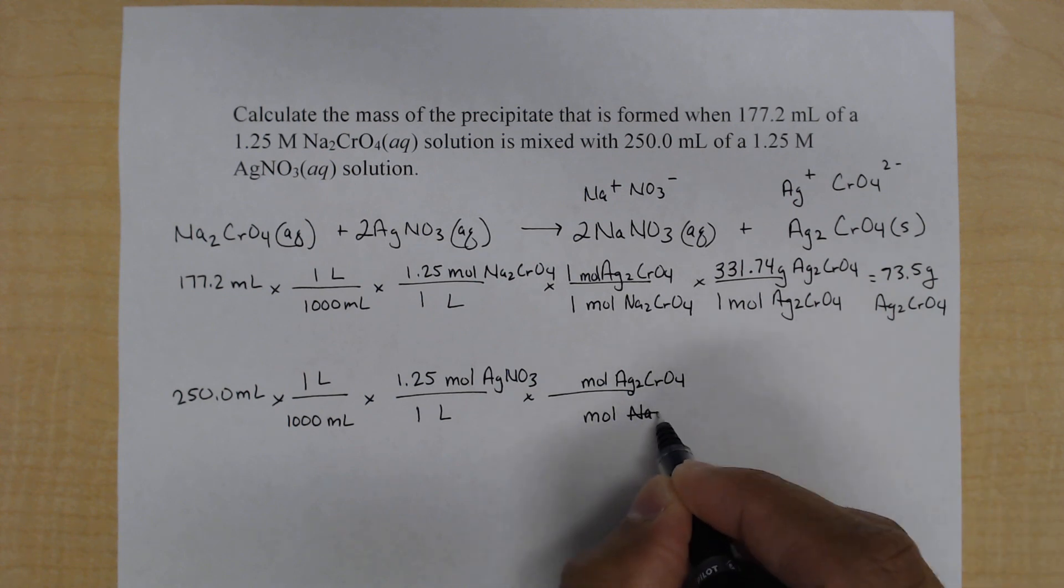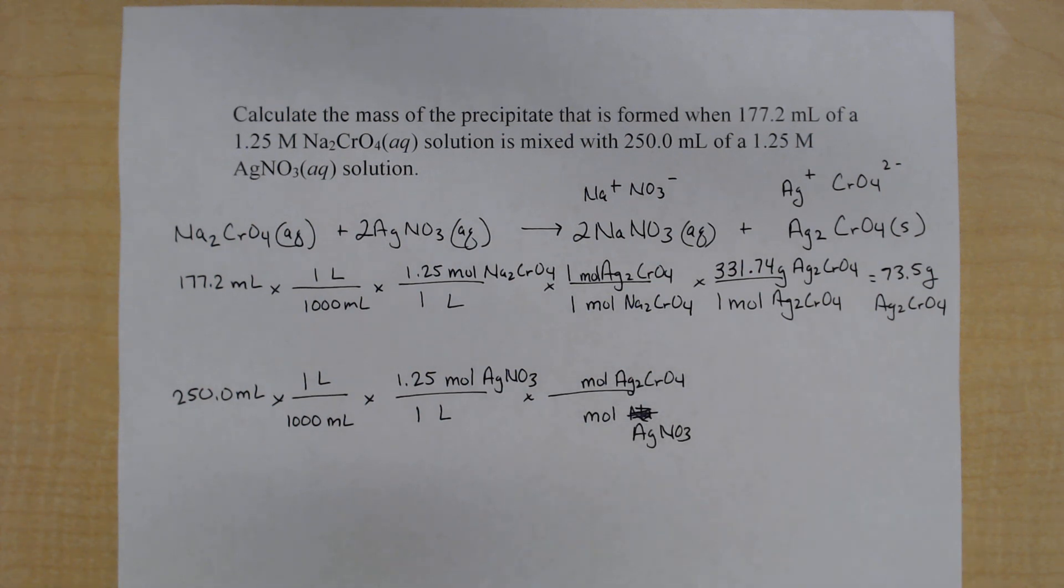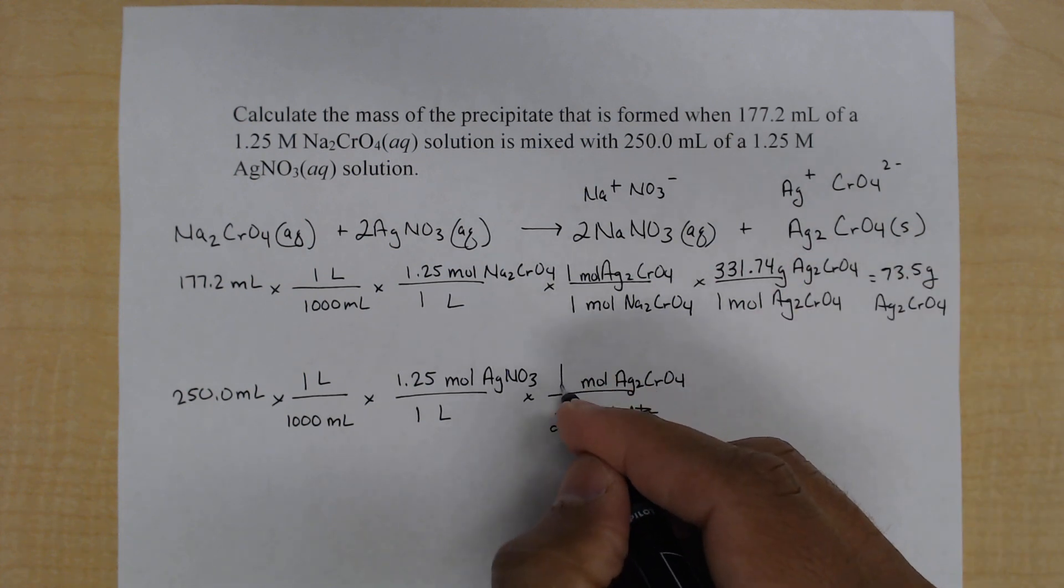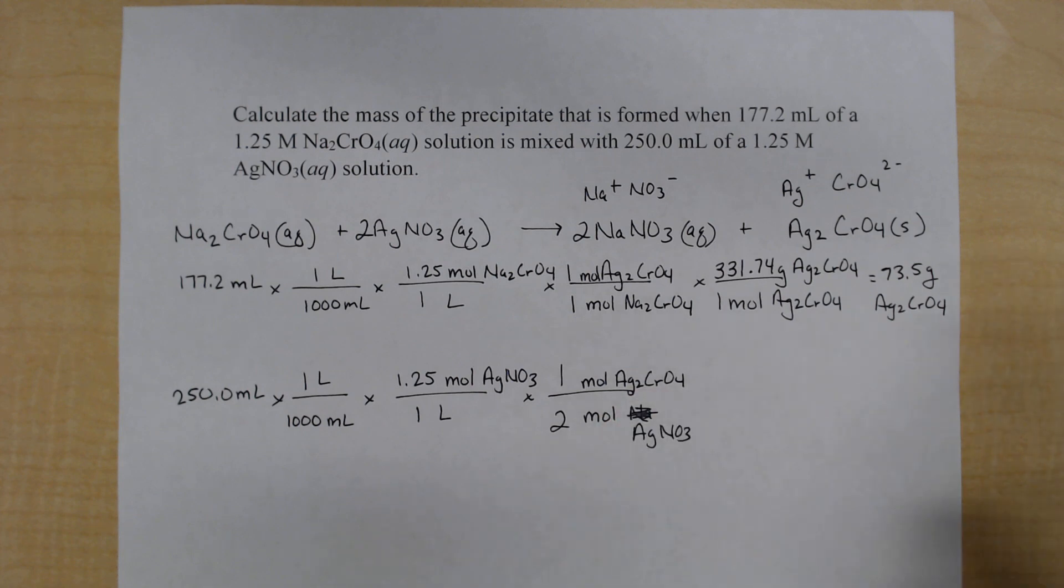Oh, I'm sorry. This is supposed to be silver nitrate. And the mol-to-mol ratio here, two moles of silver nitrate react to produce one mole of the silver chromate.